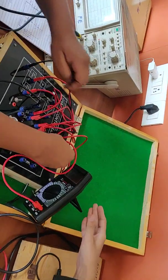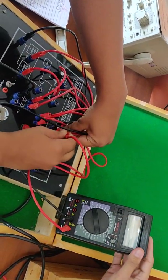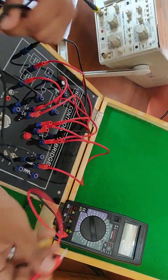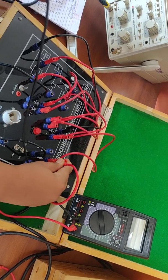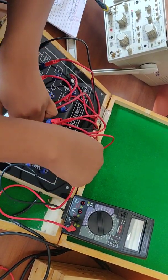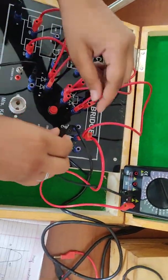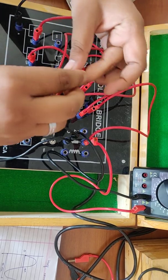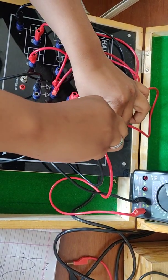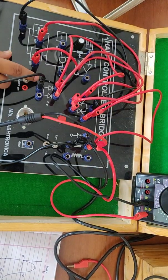Positive of DMM is given across the load and the negative to the negative of the load. Similarly we connect the terminals of the CRO respectively. And now we switch on the kit.